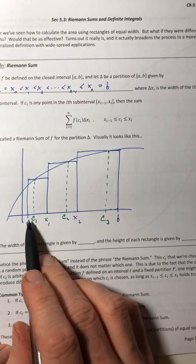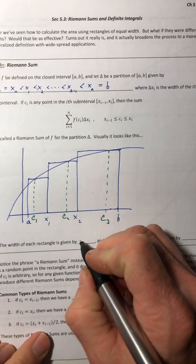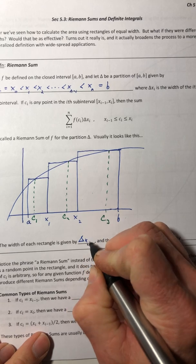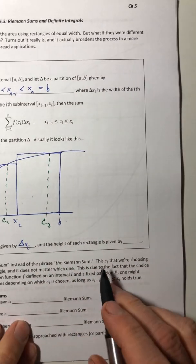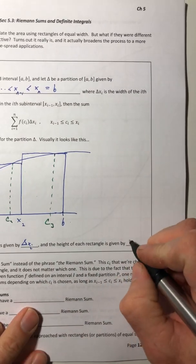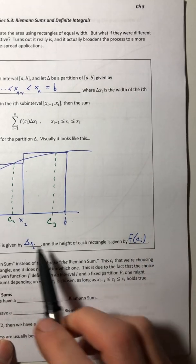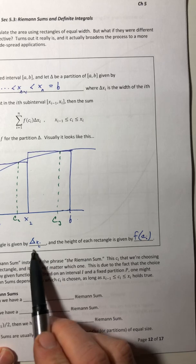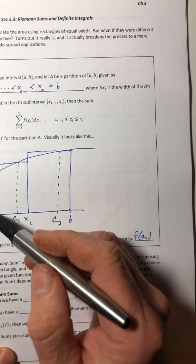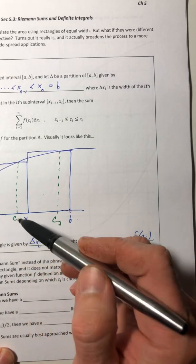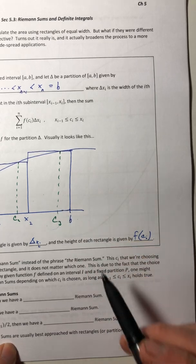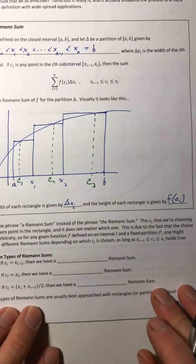So the width of each of these rectangles is given by delta x sub i and then the height is given by f of c sub i. So this distance would be the delta x and then the height would be what you get if you plug in those corresponding c values.